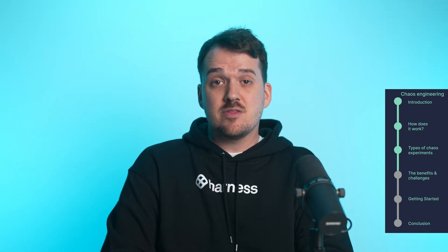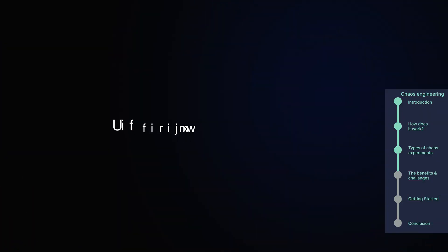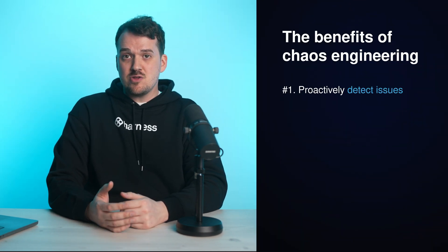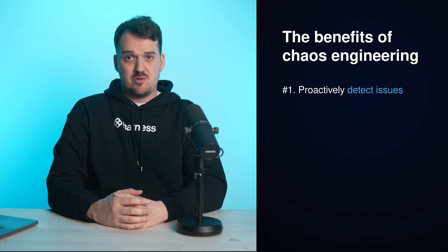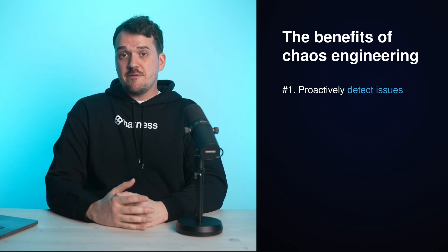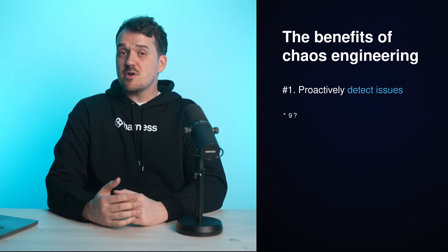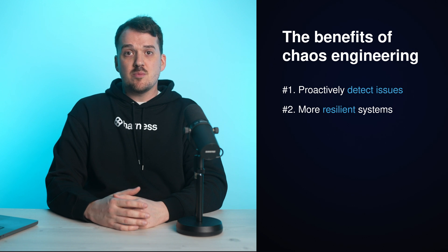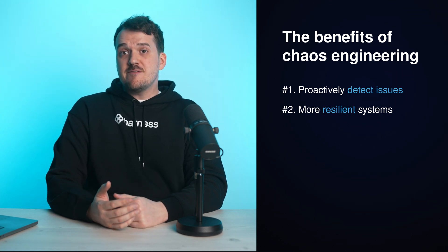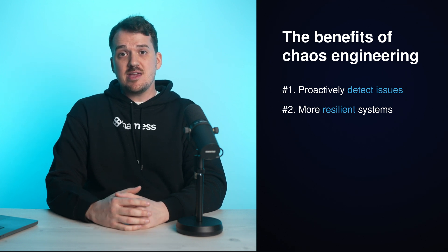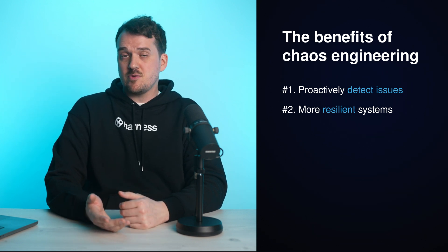So why go through all this trouble of intentionally breaking your system? The benefits are massive. Chaos engineering helps you proactively detect issues before they cause downtime or impact customers. By simulating real-world failures, you get a glimpse of how your system behaves under stress, allowing you to address potential problems early on. Chaos engineering also leads to more resilient systems — by regularly injecting failures, you can identify weak points and fix them, whether through adding redundancy, improving load balancing, or optimizing resource usage.